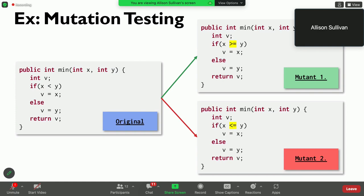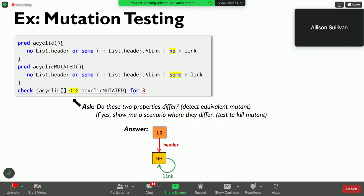So, the existence of those equivalent mutants really impacts the applicability of doing an automated mutation testing environment, even though it produces really strong tests, it just has that downside. However, in a software model,